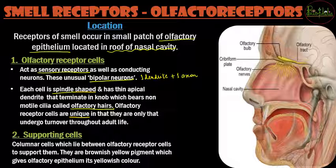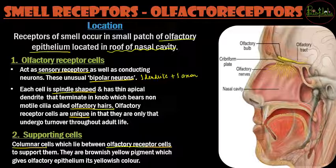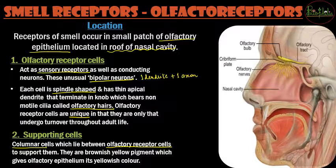The second kind of cells are the supporting cells. These are columnar cells — long column-like cells — which lie in between the olfactory receptor cells, providing support for regeneration and other functions. These cells are distinguishable because they produce a brownish-yellow pigment, and since they are present in large numbers, they give the olfactory epithelium its yellowish color.